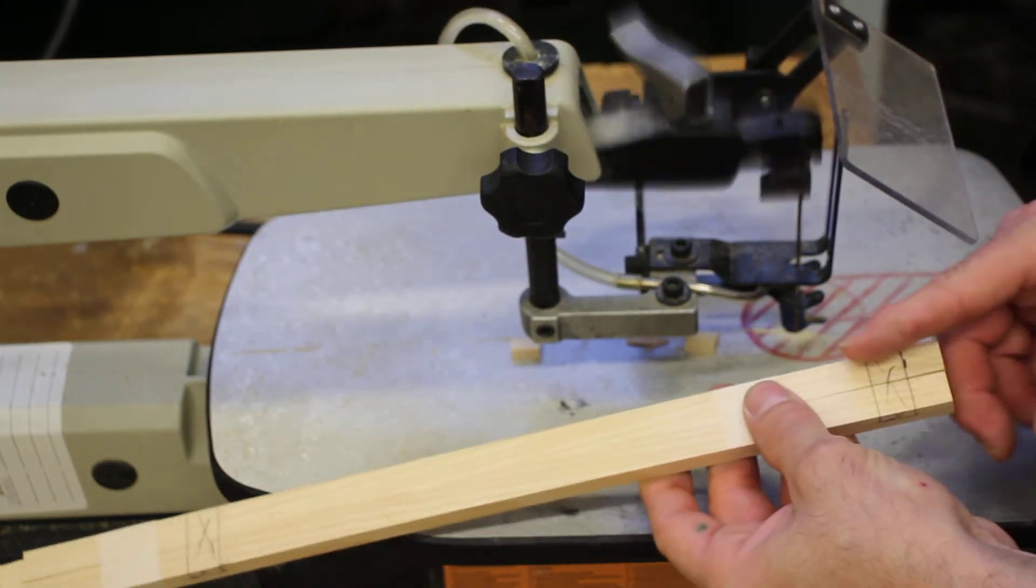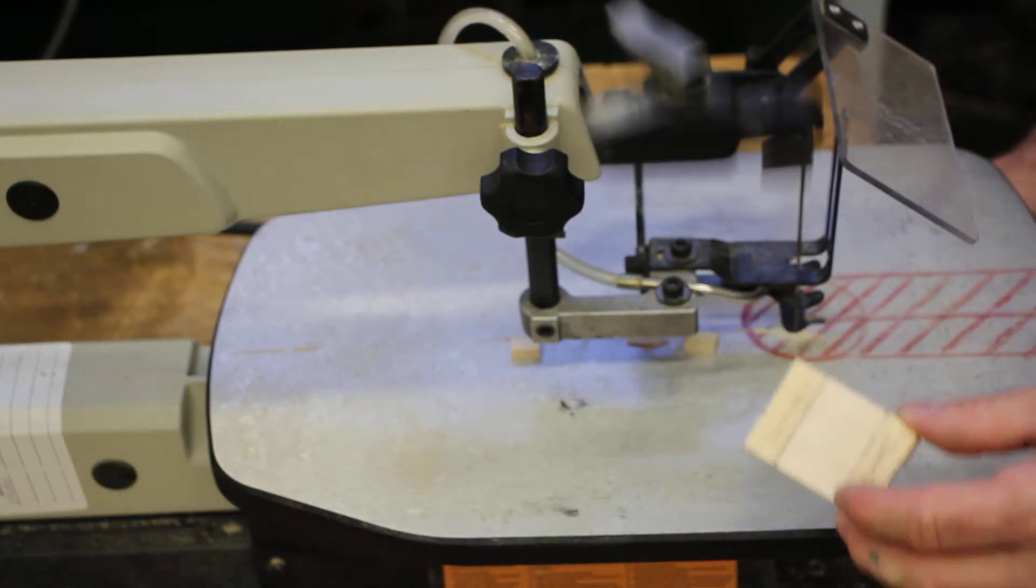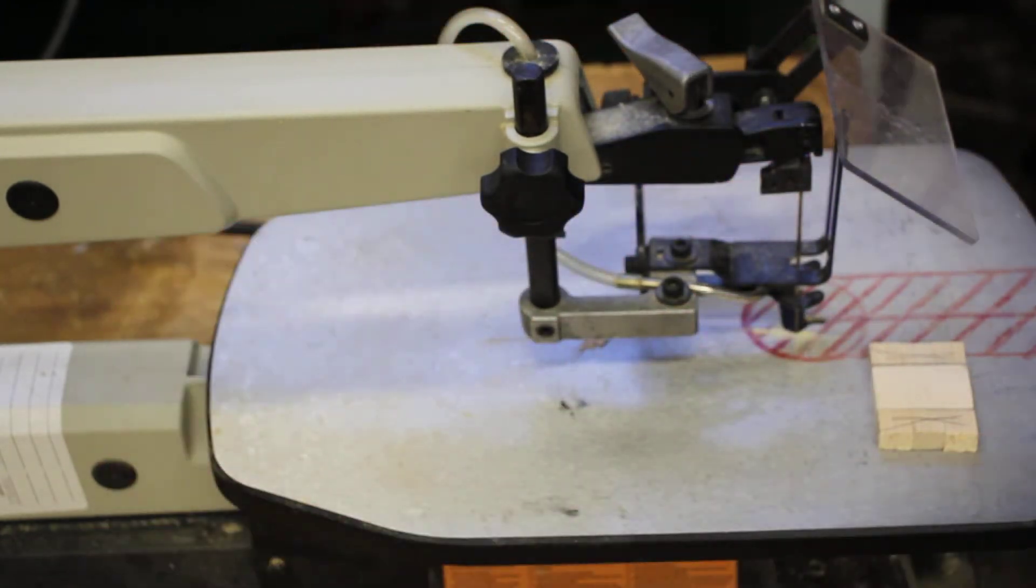I'll finish these other cuts off camera. We're going to move on to the crossmember portion. Always turn the machine off before you make any adjustments or clear the wood from behind it.